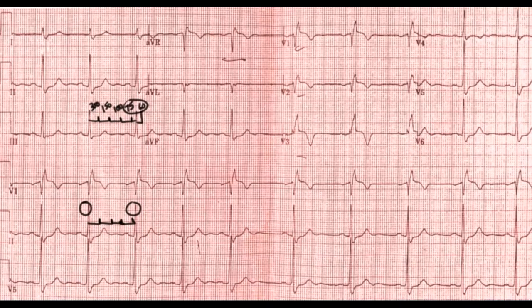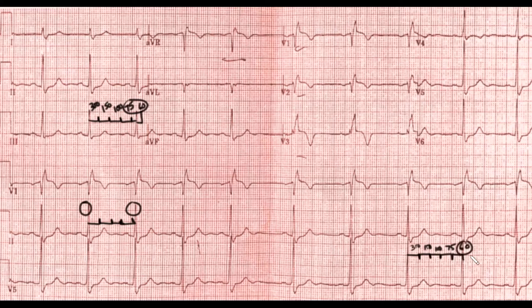Remember our count: the first box is 300, the second is 150, the third is 100, the fourth is 75. So the rate falls somewhere between 60 and 75, giving us approximately 70 on one side of the strip. On the other side, counting five boxes gives us closer to 60.